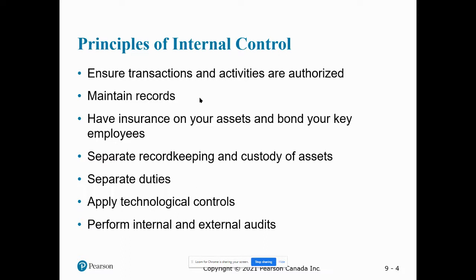There's also applying technological controls — having an online bookkeeping system, for example, where a number of different employees and owners can have simultaneous access to certain sections of the records. And then having internal and external audits. With larger companies, they'll go through external audits to ensure the books are reasonable. Canada Revenue Agency will sometimes offer to come in and check for compliance with the rules. Third parties are also used — for example, accounting businesses are asked to prepare financial statements and go over transactions for non-profits and other small businesses.